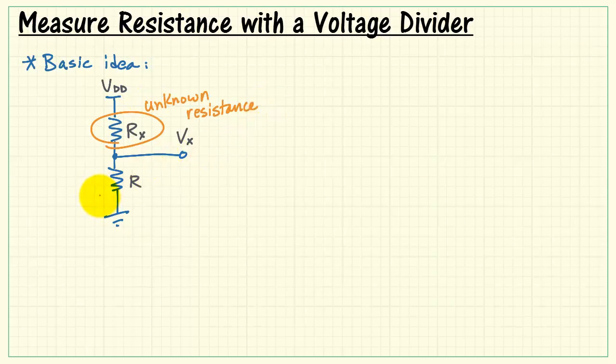Rx is an unknown resistance, and R is a known resistance. Now the voltage that appears across the known resistance is our primary measurement. We call that Vx.